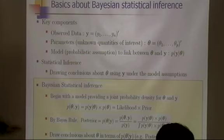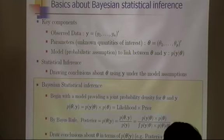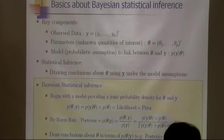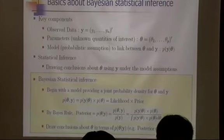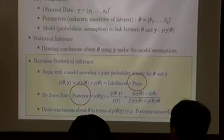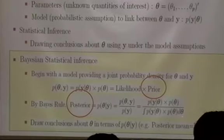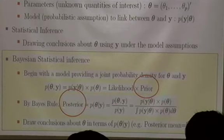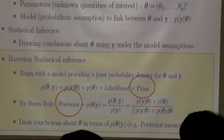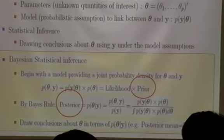We call this the posterior density for parameters given data. Bayesian statistical inference makes conclusions about theta in terms of this posterior probability density. What distinguishes Bayesian from classical inference is the prior probabilistic assumption for the parameters, from which we obtain a posterior probability density, and inferences are based on that posterior.